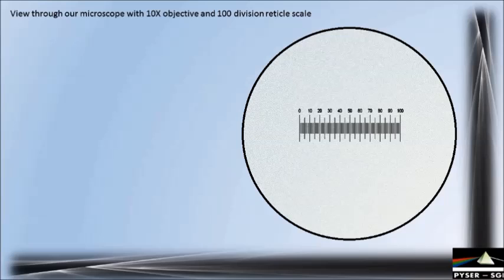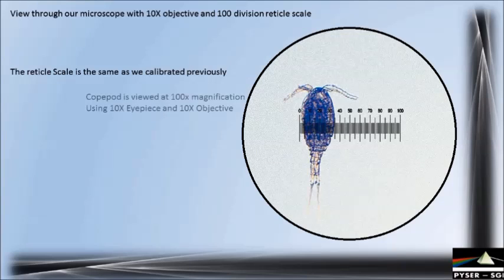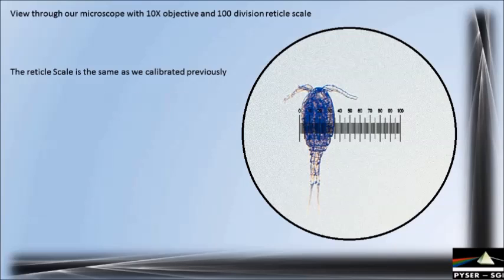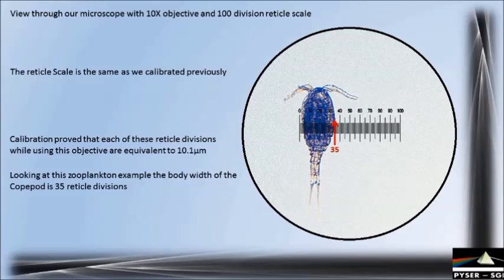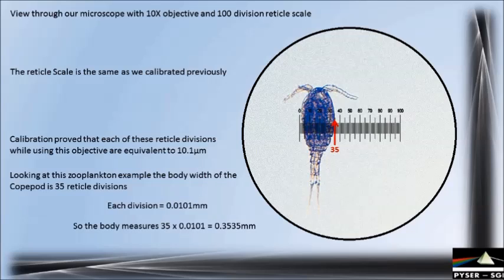Let's take what we've reviewed and use it in a practical example. Using the x10 objective and the 100 division scale — the same scale and objective we previously calibrated — we will use this zooplankton as a sample and measure the width of the body. During calibration we proved that each reticule division is equivalent to 10.1 microns while using the x10 objective. The body width is 35 reticule divisions. Each division is 10.1 microns or 0.0101 millimetres, so we calculate the body width as 35 × 0.0101 mm = 0.3535 millimetres, or a little over 350 microns.